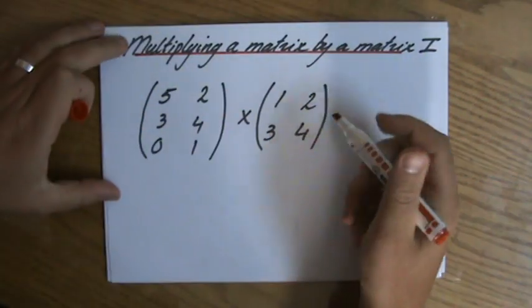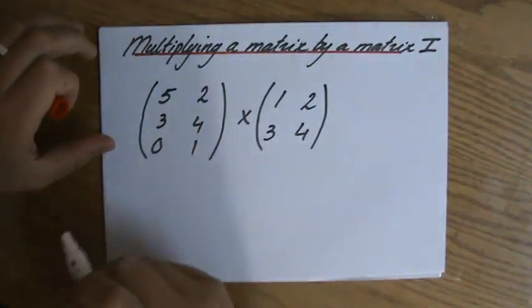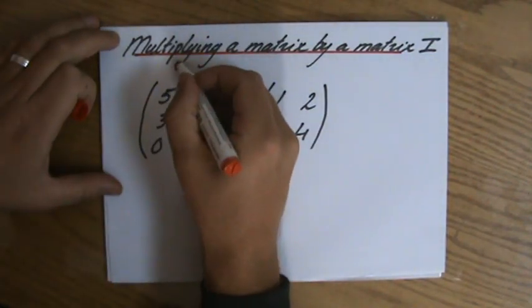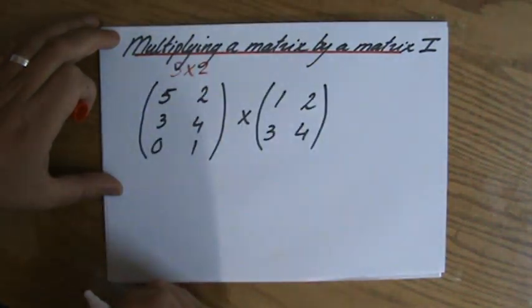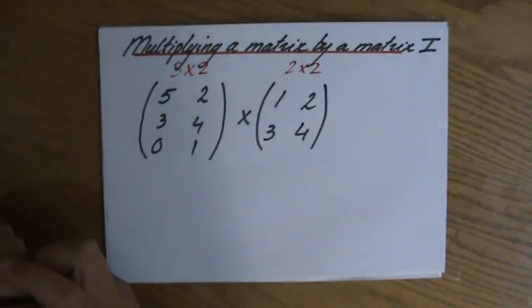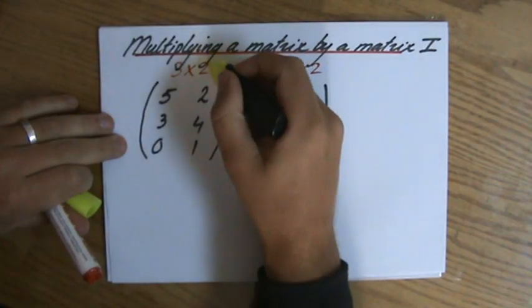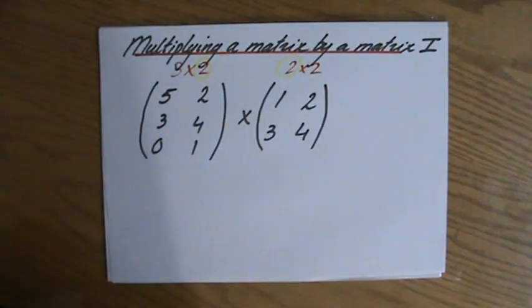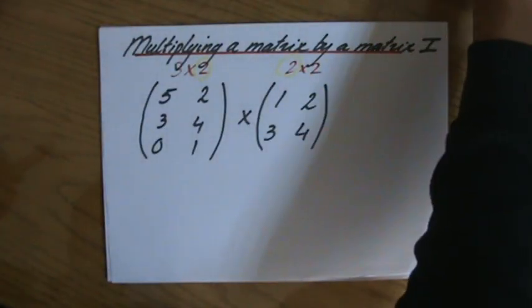I'll give you some more example questions. First of all, this is a 3×2 matrix - three rows, two columns - and the next matrix is a 2×2 matrix. You are only able to multiply matrices with each other if those two middle numbers are the same - two there and a two there. So I am able to multiply these matrices.